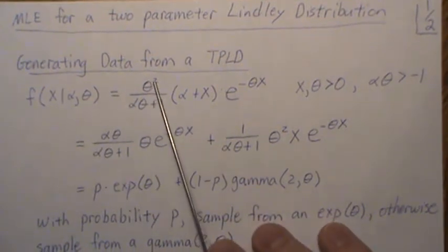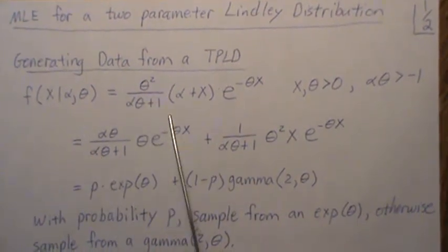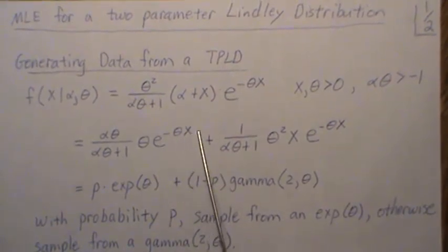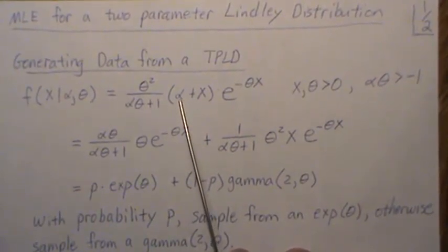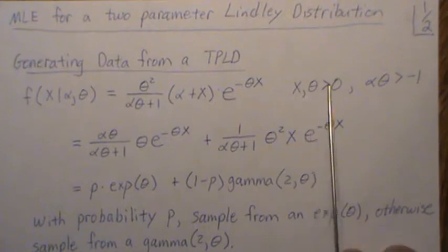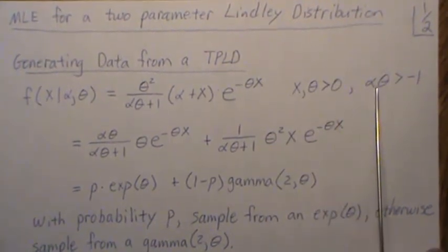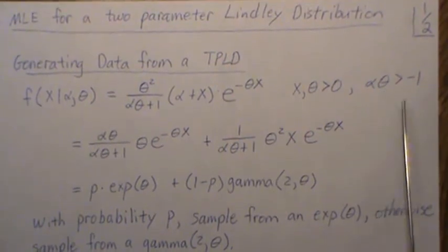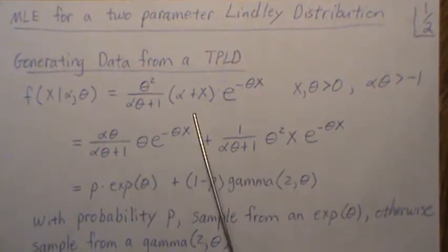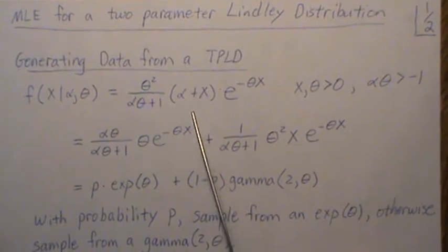First, to generate data, the density is written like this, and the two parameters, unknown parameters, are alpha and theta. We assume that x and theta are positive and that alpha times theta is greater than minus one.